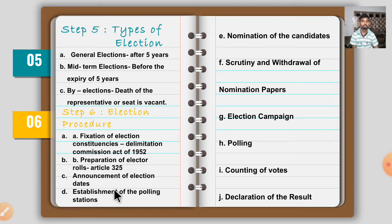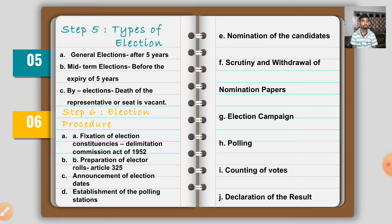The fourth step is establishment of polling stations — government buildings like schools, institutions, and colleges are booked as polling booths or polling stations. The fifth step is nomination of candidates — all parties, whether BJP, Congress, or regional parties, nominate their own candidates according to their qualifications and work. The sixth step is scrutiny and withdrawal of nomination papers — nominations are verified within given dates, and candidates can withdraw within that time if they wish.